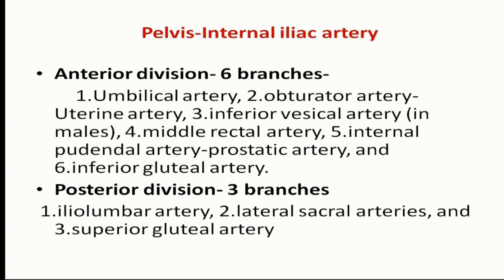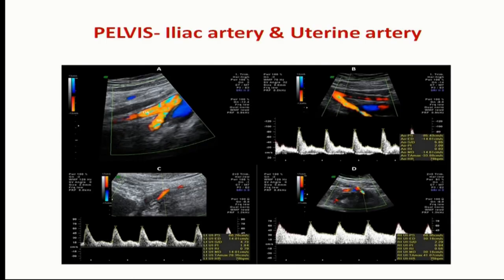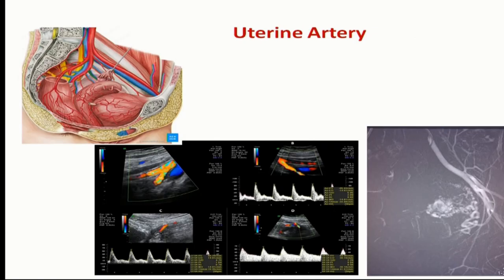Coming to the pelvic anatomy: the internal iliac artery entirely supplies the pelvis. There is an anterior division and posterior division — we all know the branches. On Doppler, always assess the external iliac or internal iliac for a triphasic waveform. Whenever there is a biphasic or monophasic flow, there is a lesion. Biphasic indicates a stenotic lesion with high velocity. Monophasic flow indicates proximal occlusion due to collateral flow, and for proximal occlusion we proceed to CT angiography.